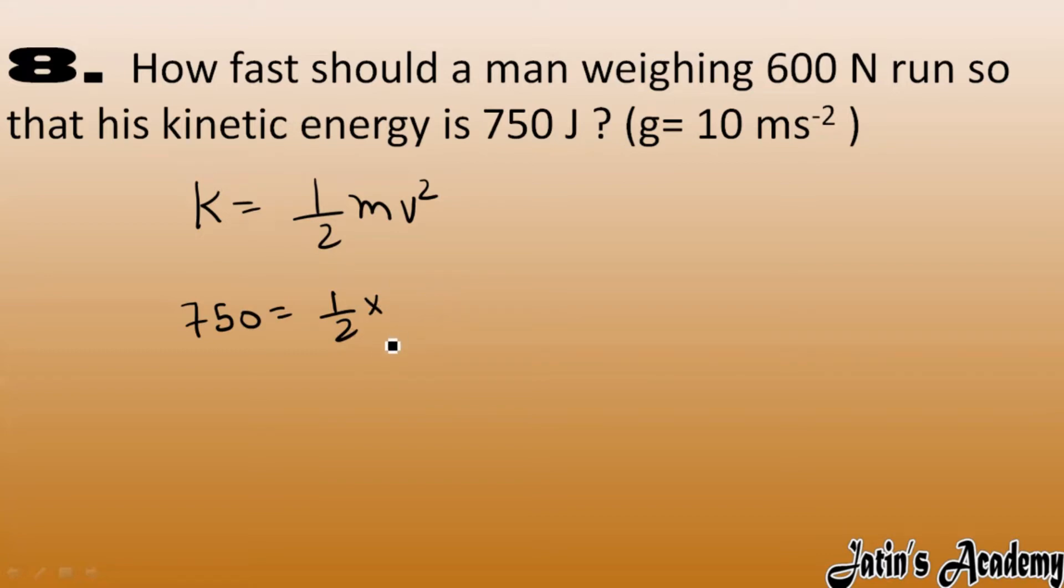Weight we have m into g. Weight we have is 600 Newton. Mass we have to calculate. G value is 10, so dividing, mass we got as 60 kg. So put the value of mass as 60.